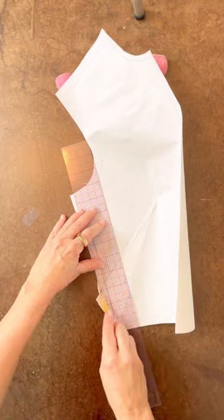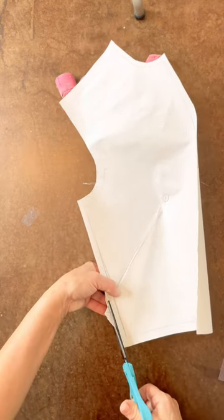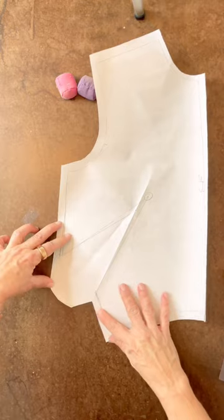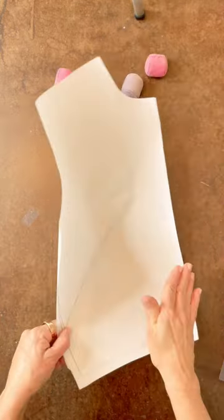Add the half an inch seam allowance. Cut while closed and there's your dart excess. It's always sewn towards the center front.